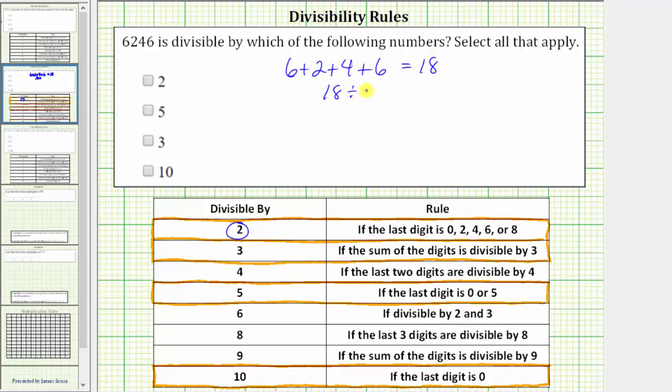Because 18 is divisible by 3, so is 6,246. Let's go ahead and circle 3.